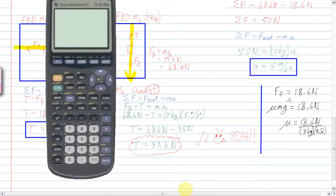That's the gene. I'll clear that up. So, 18.6 divided by the 3 divided by the 9.8. So, the coefficient of friction is 0.633.